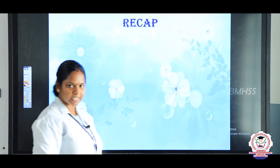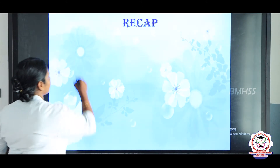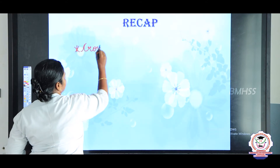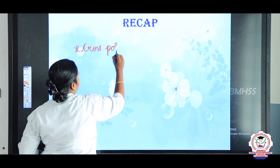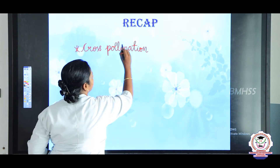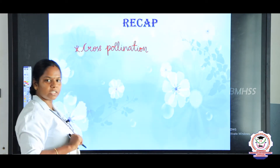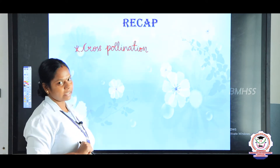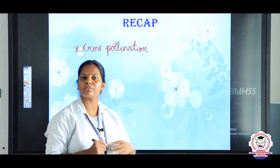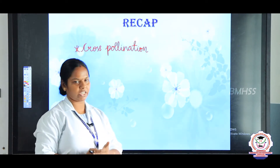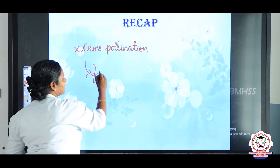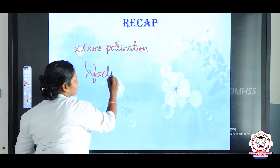What did we discuss in the previous session, children? We discussed about cross pollination. I will ask you one question: what is cross pollination? If the pollen of one flower is transferred to the stigma of another flower, it is said to be cross pollination. Next, we discussed what are all the factors that favor cross pollination.